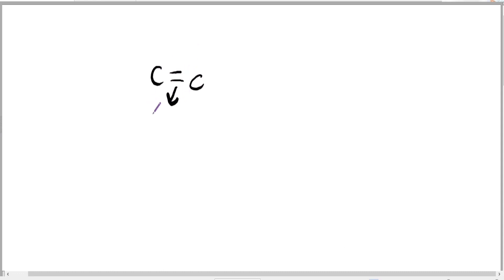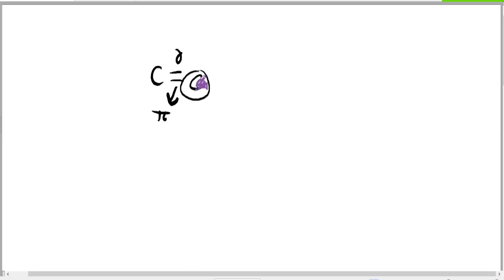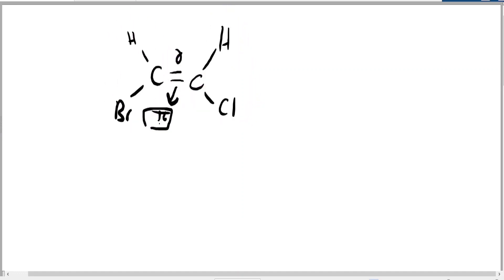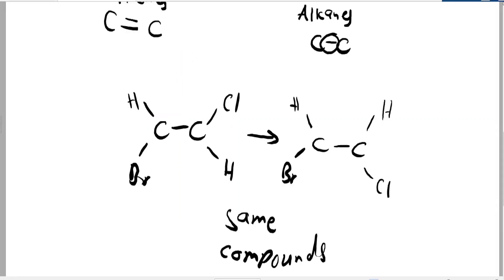When you have a double bond, which consists of a pi bond and a sigma bond, the problem comes with the pi bond. This pi bond stops the carbon atoms from rotating. I can't simply rotate either side of the carbon atom because of the pi bond. Alkanes only had sigma bonds, and sigma bonds allow free rotation of any side of the carbon atom.